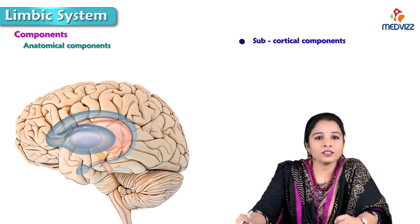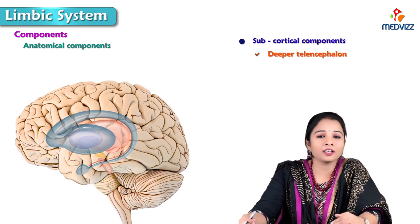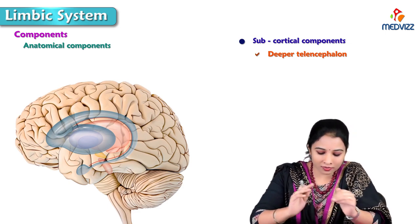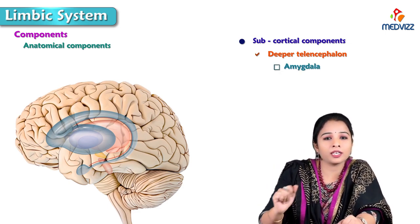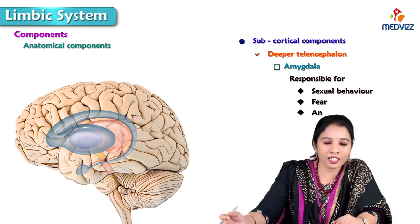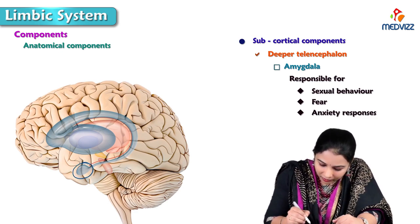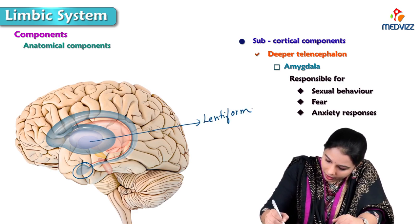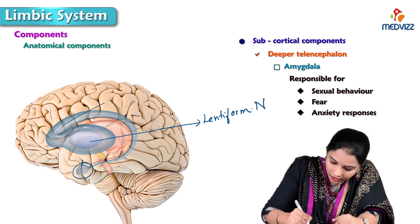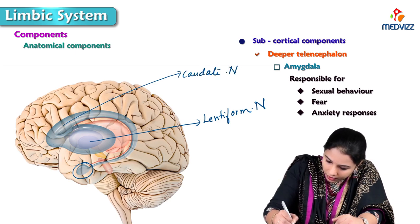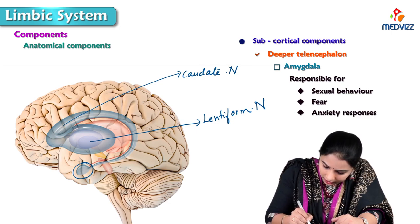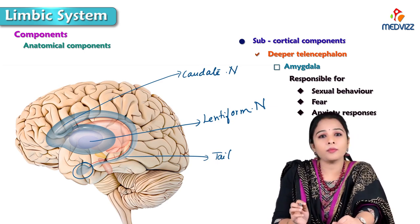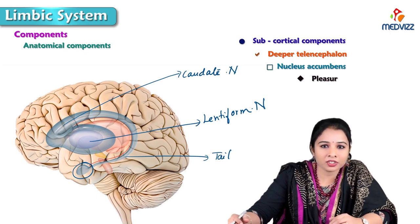Now let's talk about the subcortical components — the deeper parts. The first is the amygdala, mainly responsible for sexual behaviour, fear, anxiety and responses. Here we can see the caudate nucleus, lentiform nucleus, head, body and tail of caudate nucleus, and the tail of the caudate nucleus terminates in the amygdala. Nucleus accumbens is associated with pleasure, addiction and reward. Next, the septal nuclei lie in front of the lamina terminalis.